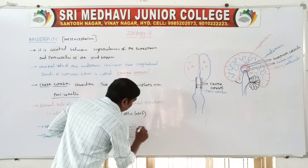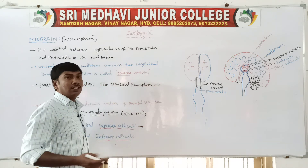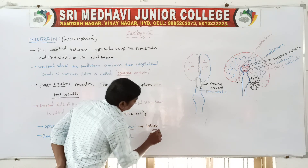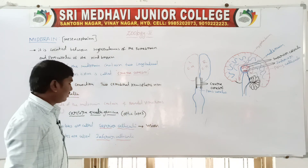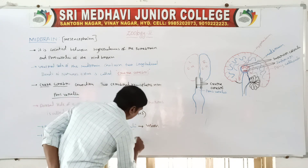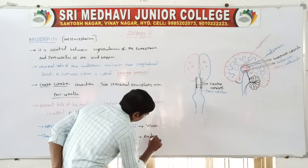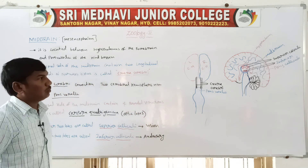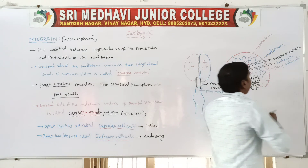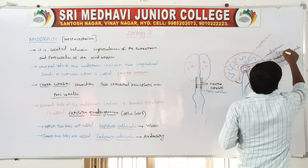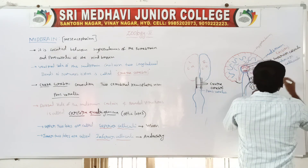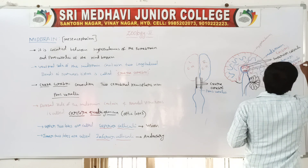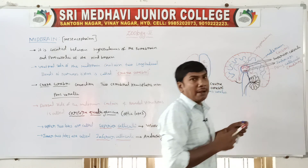The function of the superior colliculi is vision. The inferior colliculi function is the auditory function. So the upper two lobes function is vision, and the inferior two lobes function is auditory.